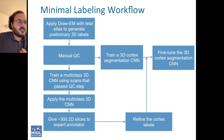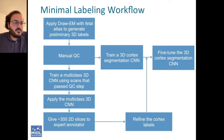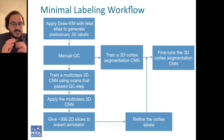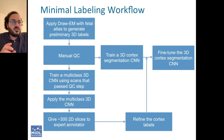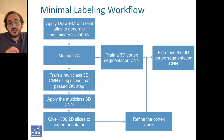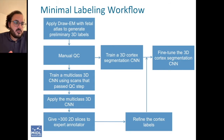The expert annotator then refines those slices, and we use the refinements to feed back into a 3D network dedicated just for cortical gray matter. Essentially, we use a 3D model to perform 3D segmentation, but we only require the manual labeling of a small subset of 2D slices.